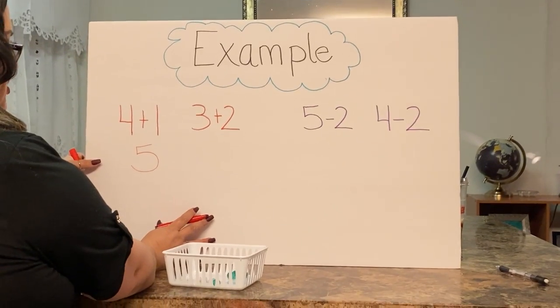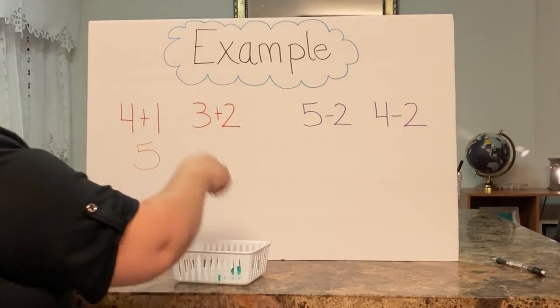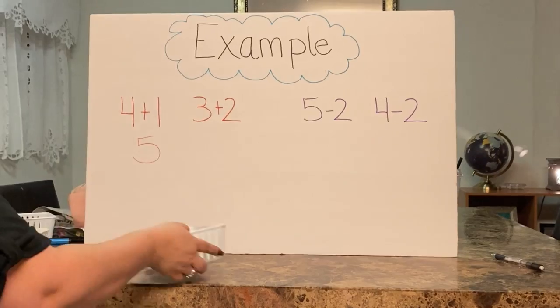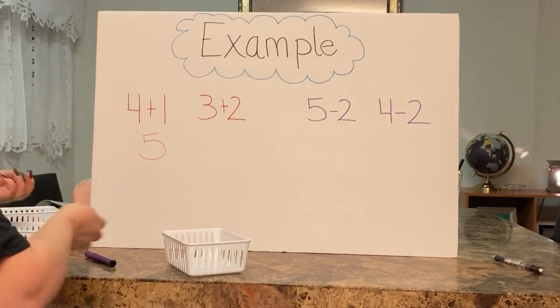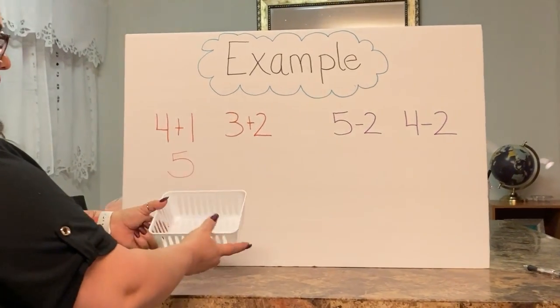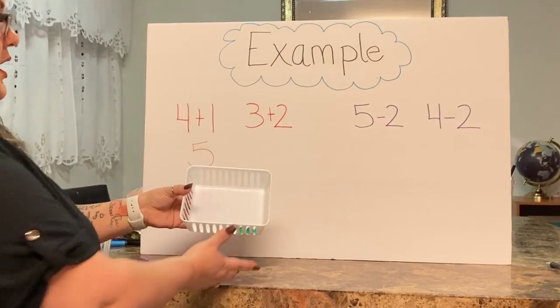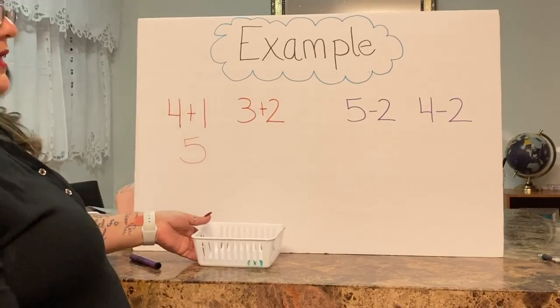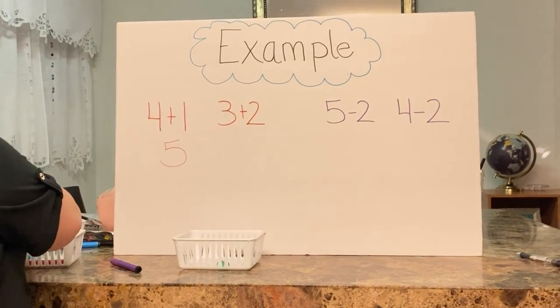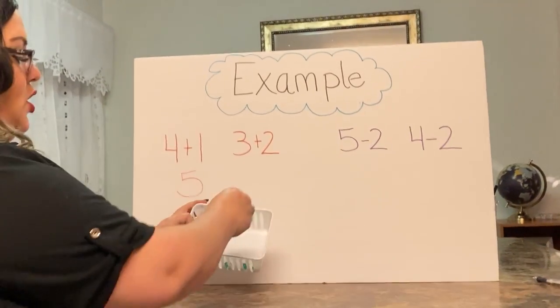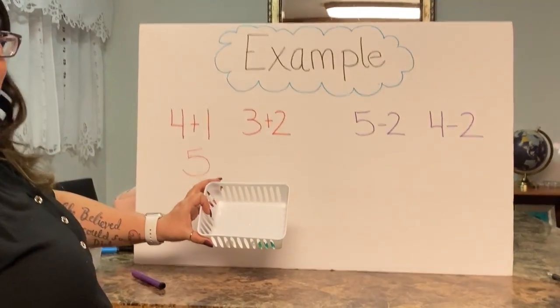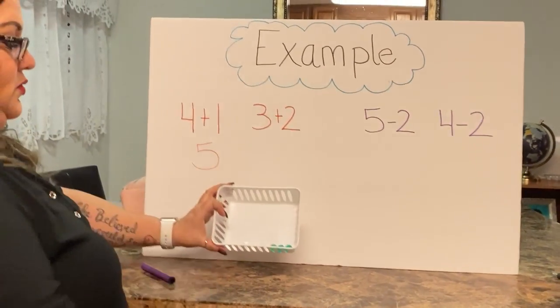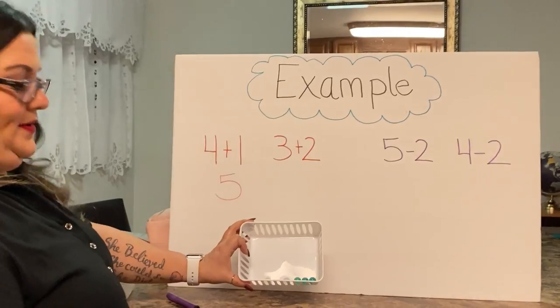Let's try another addition problem. Three plus two. So you would take three green marbles. One, two, and three. Three green marbles plus two white marbles. One, two. Three plus two equals five.